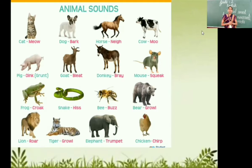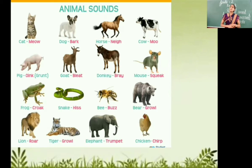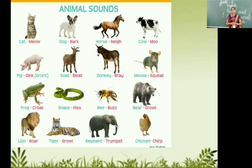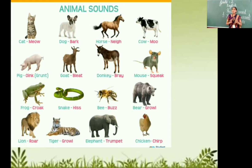The first picture is cat — cat makes the sound meow. Dog makes the sound bark. Next is horse — the horse makes the sound neigh (N-E-I-G-H). Cow makes the sound moo. Pig — oink. Goat — bleat. Donkey — bray. Mouse — squeak. Frog — croaks. Snake — hiss. Bee — buzz. Bear — growl. Lion — growl. Tiger — growl. Elephant — trumpet. Chicken — cluck. Different animals have different sounds, and these sounds have different names in English.